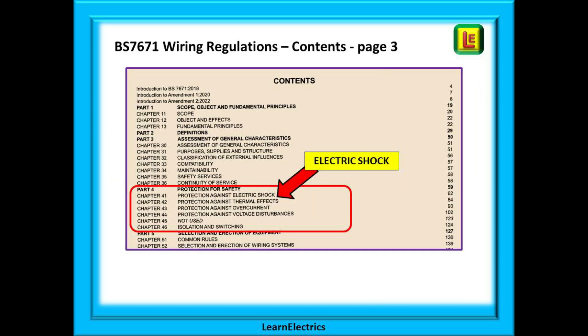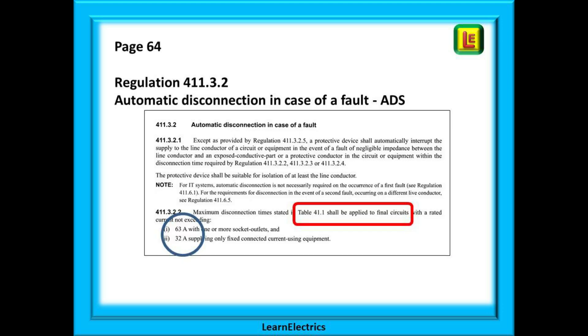If we look at page 3, the contents page of the wiring regulations book, we will find part 4, and this is all about protection for safety. Below this heading is chapter 41, protection against electric shock, and this is where we will find information about ZS and disconnection times. If we turn to chapter 41 and go to page 64, we will find Regulation 411.3.2. This is our starting point. It is titled Automatic Disconnection in Case of Fault. This is what we shorten to ADS, Automatic Disconnection of Supply. In other words, if a fault occurs, the fuse or breaker will automatically disconnect the supply and make the circuit safe.